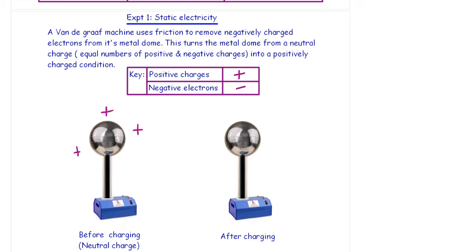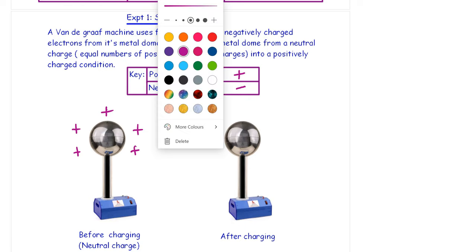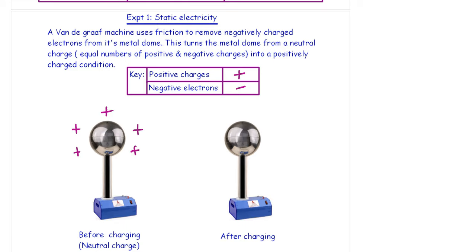A Van de Graaff machine uses friction to remove negatively charged electrons from its metal dome. This turns the metal dome from a neutral charge into a positive charge. So before it's charged up, the Van de Graaff machine has five negative charges. It will also have the same number, so it has five positive charges. And they cancel each other out. So this is a neutrally charged object at the start.